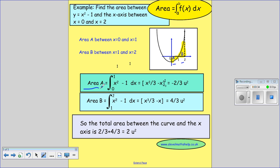So we find the area of a using the formula. So the area of a, we're going to find between zero and one. So our limits are zero and one. And then we take our y or our f of x is x squared minus one.